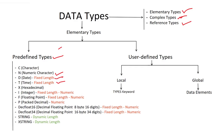So those are your predefined elementary types. Elementary types can be of two kinds: predefined types and user-defined types. In this video we tried to understand the predefined types — there aren't many, and you don't have to memorize them. As we keep using them in our programs throughout the course you will naturally remember them. In the next video we'll talk about user-defined types — see you there.